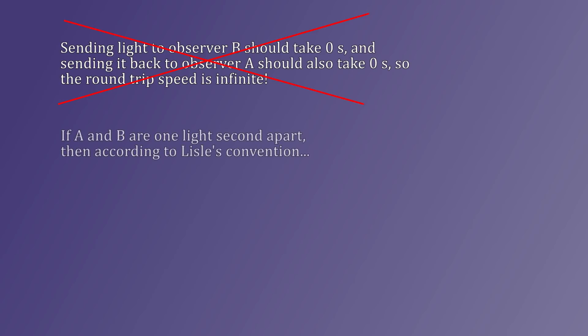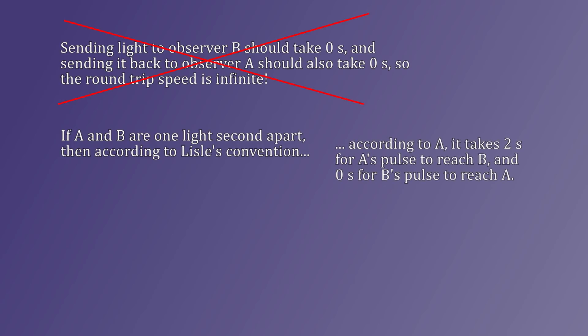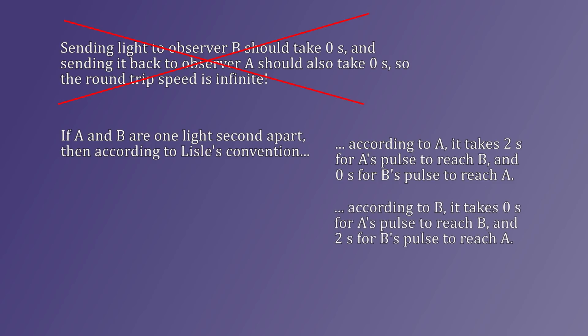All that matters is that light is going back and forth between them. A and B are, for the sake of simplicity, one light second apart — by which I mean it takes one second to make the trip from one to the other at C. In A's frame of reference, A is the observer, so according to him, going by Lyle's convention, it takes two seconds for A's light pulse to reach B. It then takes zero seconds for B's pulse to reach A. Total round-trip time: two seconds. In B's frame, A's pulse takes zero seconds to reach B, and then it takes two seconds for B's pulse to reach A. Again, the total round-trip time is two seconds.